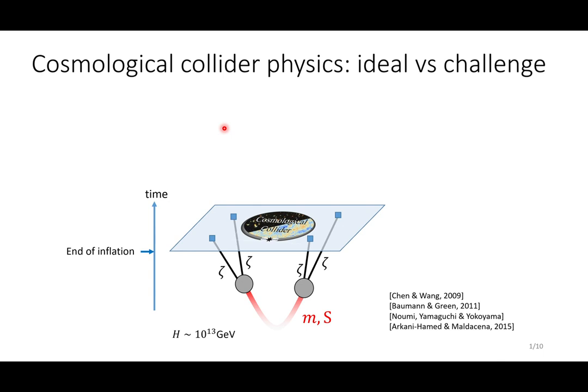Let me start with a brief review of the cosmological collider physics. The cosmological collider physics is a hot topic risen in recent years, and the idea is quite interesting. Consider the expansion of the universe during inflation. This exponential expansion spontaneously produces particles with mass m and spin s during inflation, and these particles propagate in our spacetime and then interact with the curvature perturbation zeta.